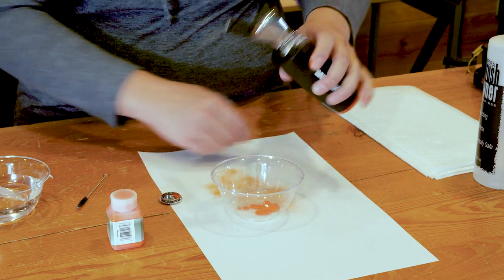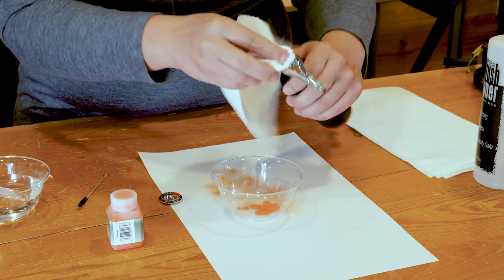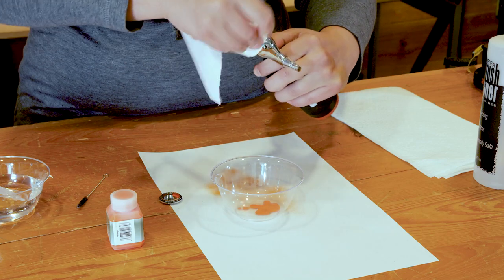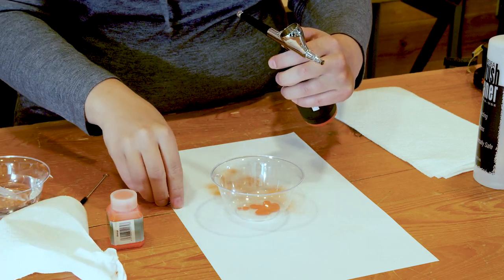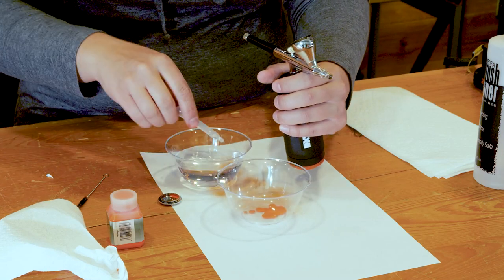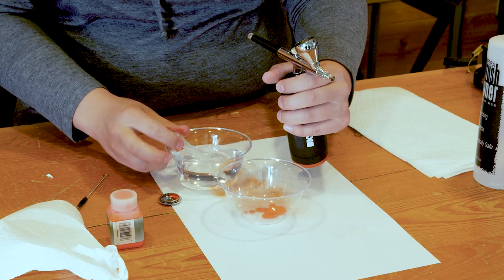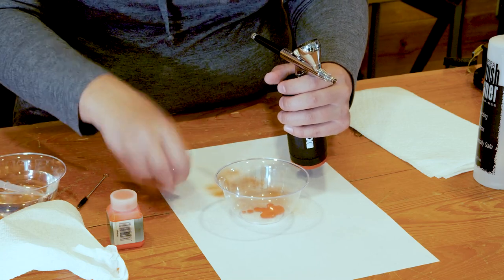So pour that out, take a paper towel, wipe out the reservoir as best you can, and then we're actually going to put a little bit of water into the paint cup, and we're going to flush that through the system.